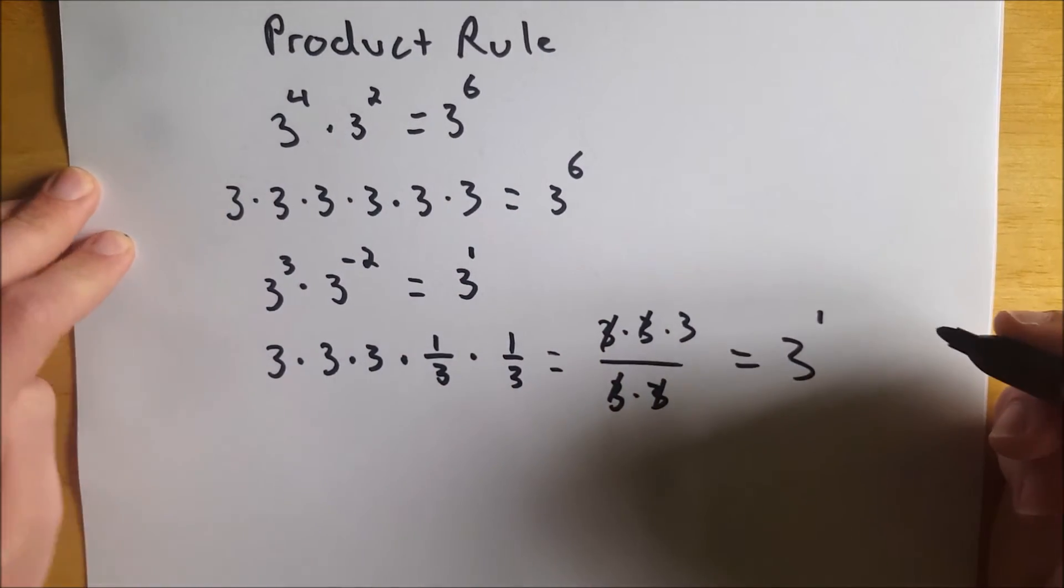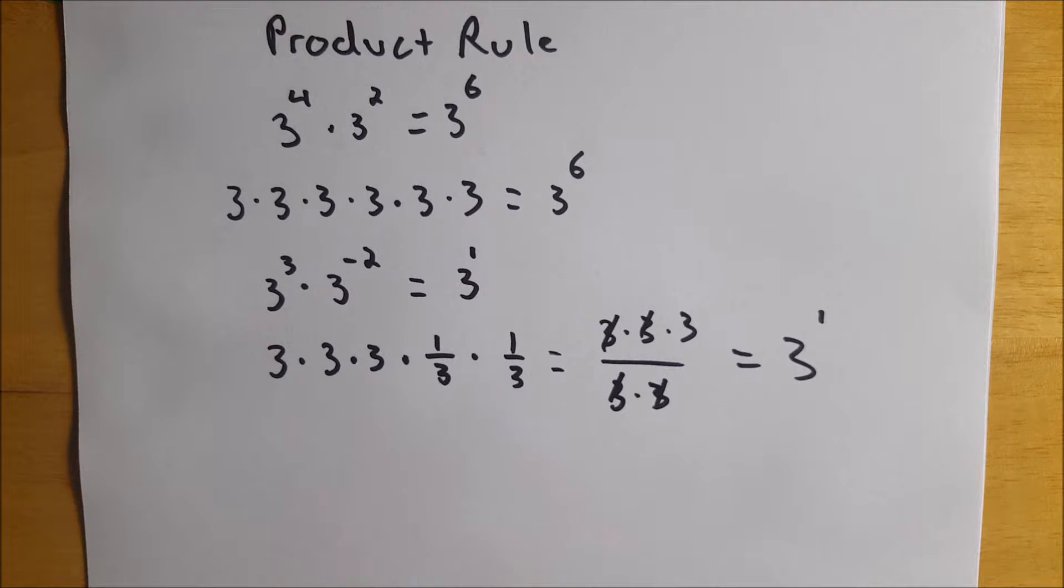which is the same as 3 to the first. So I hope this video helped explain why the product rule for exponents works. Let me know in the comments if you want any other videos, or if you need anything about this video clarified. Thank you very much for watching,